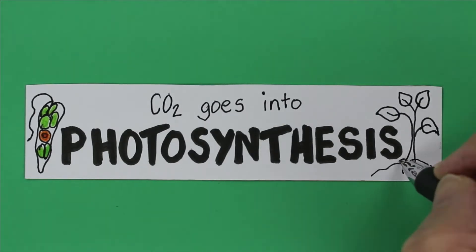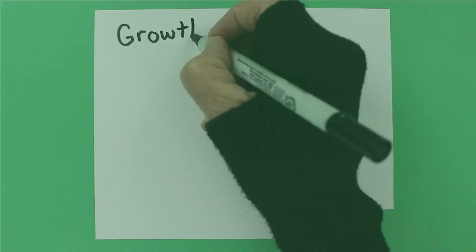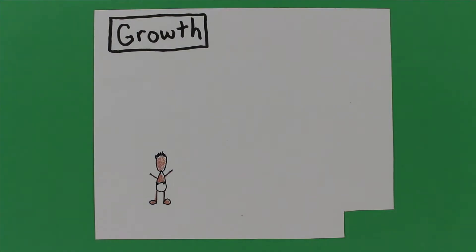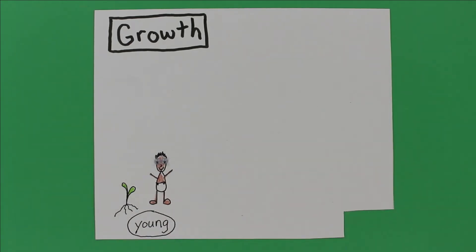Photo means light and synthesis means making something. What are they making? To answer that, we can start by comparing this toddler and this cottonwood seedling. They're both small and they're both going to grow a lot.